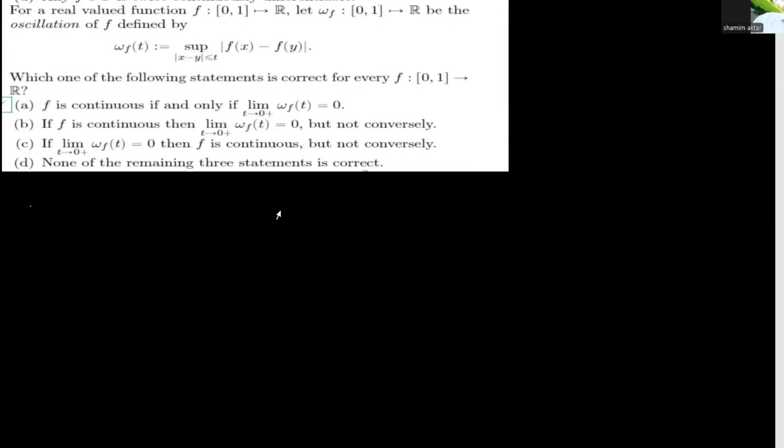Welcome back to my YouTube channel. Today we will discuss a TIFR exam question. The question is: f is a function from the closed interval [0,1] to ℝ, and another function wf is defined on [0,1] as wf(t) = supremum of |f(x) − f(y)| where |x − y| ≤ t.